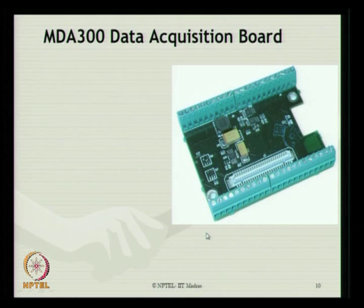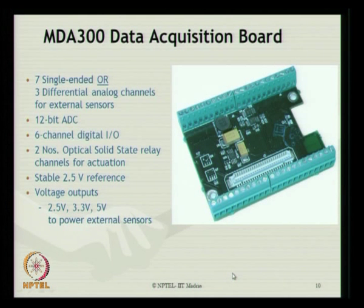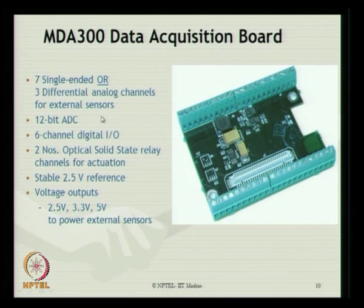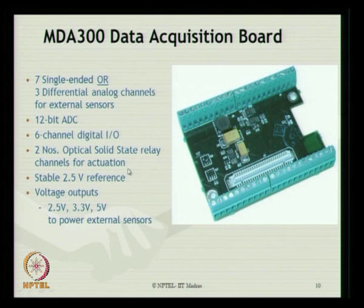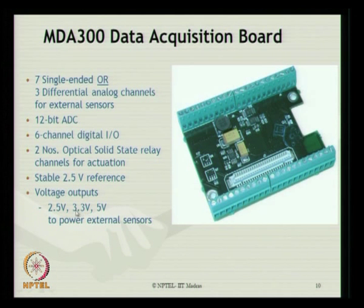The MTS 300 data acquisition board physically looks like this, featuring seven single-ended or three differential analog channels for external sensors. It contains a 12-bit ADC and a six-channel digital input/output signal configuration. It contains two optical solid-state relay channels for activation. It is stable at 2.5 volt reference voltage, and the voltage outputs are generally 2.5, 3.3, and 5 volts to power external sensors.